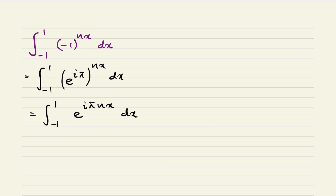Okay, then we can integrate here e^(iπnx). So you know if we integrate, we will have e^(iπnx) over iπn, limit from -1 to 1. Okay, then if we plug in the limit, we know we have e^(iπn) minus e^(-iπn) over iπn.